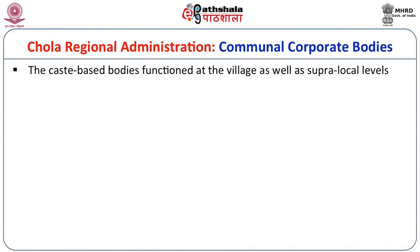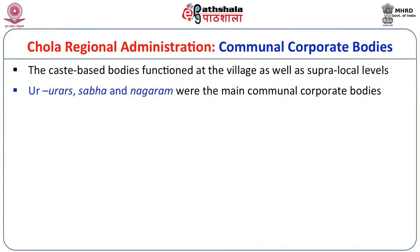We have evidence for Urar, Sabha, and Nagram. The Urar is the administrative entity of the Ur, that is the Vellanvahai or farming community's village. The Sabha refers to the administrative unit of the Brahmana villages. The Nagram is the body of merchants or commercial quarters. These were the main communal corporate bodies. The Natars functioned at the Nadu level. We have different kinds of administrative systems for Urs and Nagarams, though we do not get references as detailed as the Uttaramirur inscription, which clearly sets out the rules and regulations for managing a Brahmin village.